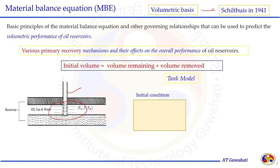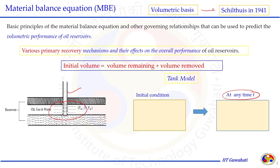Starting with the initial condition, the reservoir boundary is shown, and as time progresses production happens; some influx may also occur. When the reservoir performance is evaluated at any time, we still have the same reservoir dimensions — the reservoir volume remains constant in this volumetric balance. We understand what is happening in terms of volumetric changes due to different mechanisms responsible for production, water encroachment, or external fluid injection.